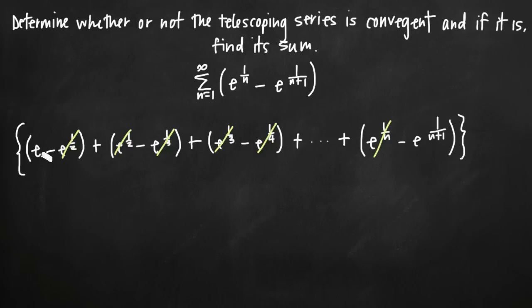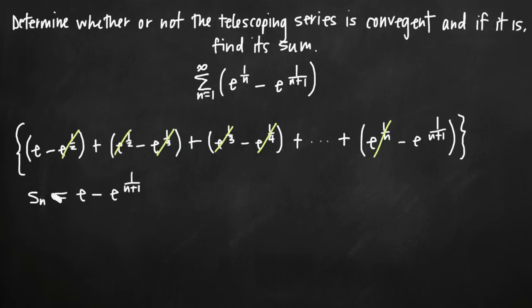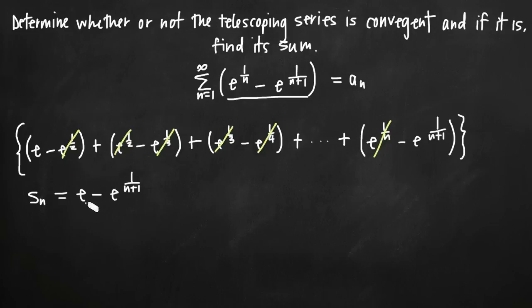All you're ever going to be left with is the very first term and the very last term. So the nth partial sum s sub n equals e minus e to the 1 over n plus 1. Finding this explicit model for s sub n alone proves that the telescoping series is convergent — that's your convergence test for telescoping series.